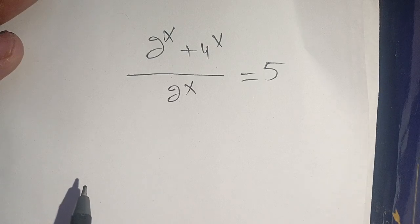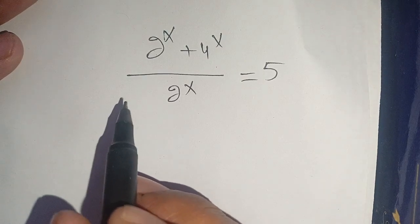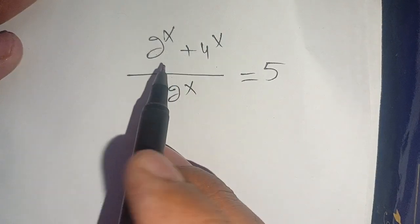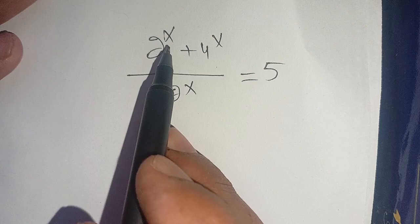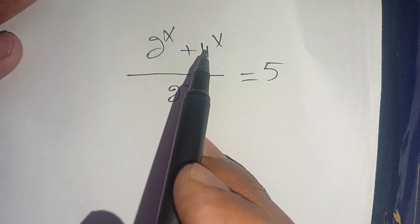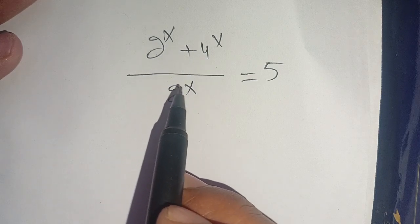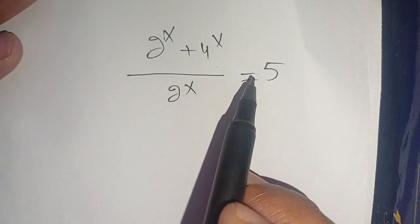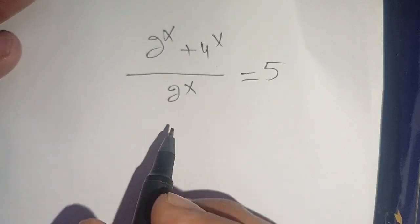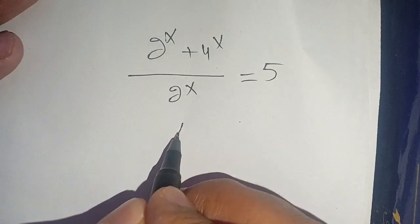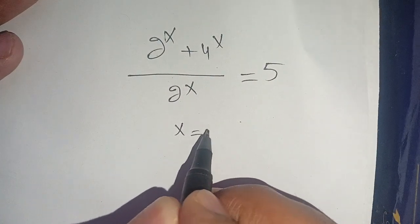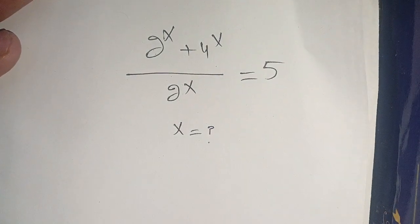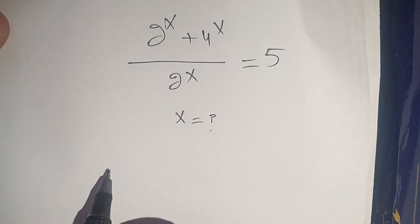Hello everyone. In today's video we are going to solve this exponential equation: 2 raised to power x plus 4 raised to power x, divided by 2 raised to power x, is equal to 5. We have to find the value of x which satisfies this exponential equation. Let us solve this.